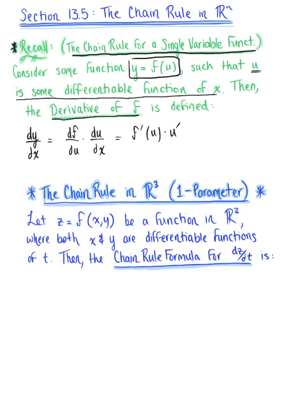To get us started, I want to look specifically at the chain rule in 3 dimensions with 1 parameter. We let z equal f of x, y be some function in space, where both x and y are differentiable functions of t. Keep in mind that t is that arbitrary parameter — some arbitrary real number. Then the chain rule formula for the derivative of z with respect to t is defined as follows.